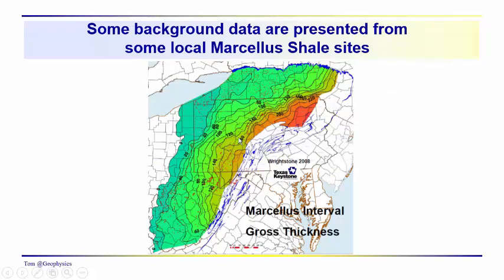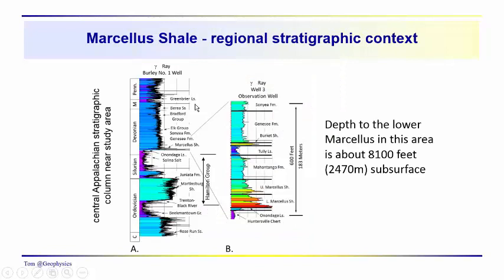In the central Appalachians of North America, we have the Marcellus Shale, which is a prolific shale gas reservoir. You can see that it thins over to the northwest, exceeding up to 200 or more feet in thickness in some areas, going off to zero to the west-northwest. We're going to be looking at some examples that are probably characteristic of a 100 to 120 foot thick region.